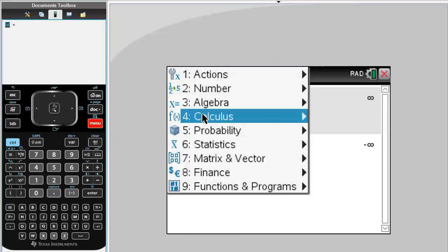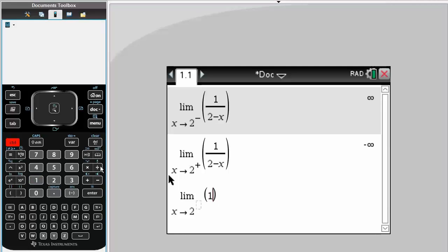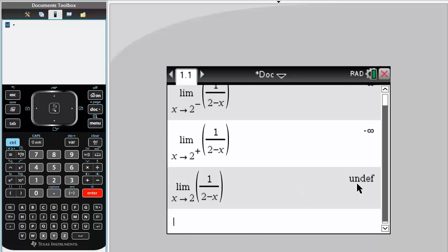And therefore, if we do the limit as x approaches 2 in general, so that means 1.999 and 2.0001, we would get does not exist. So let's just simply try it. 1 divided by 2 minus x. We get undefined.